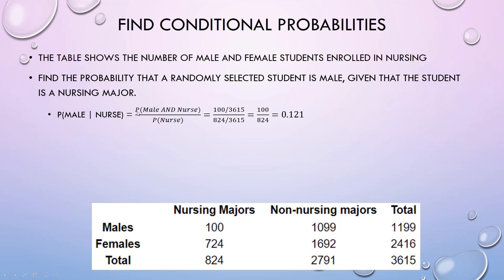The probability male given they're a nursing major is the probability they're male and a nursing major, which is 100, out of the total, divided by the given - the probability they are nursing majors, 824 out of the total. The totals cancel, the 3615s cancel, so you end up with 100 over 824 and you get your probability.